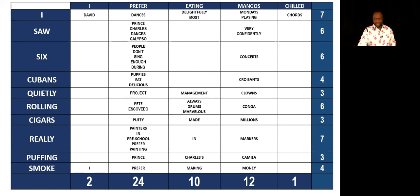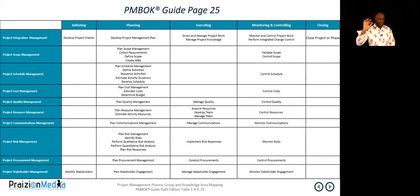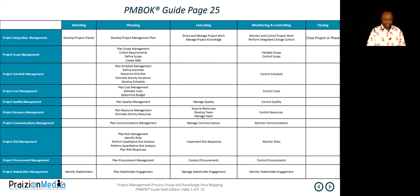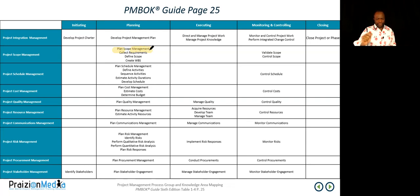These are my mnemonics for the PMP exam. You can see the first one: 'David dances delightfully, most Mondays playing chords.' Once you have those 49 processes at your fingertips, it makes more integrative sense. Moving into planning, every knowledge area has a 'Plan [name of knowledge area] management' process for the most part — that's the first process in planning. Plan scope, plan schedule, plan cost, plan quality management, plan resource management, plan communications management, plan risk management.